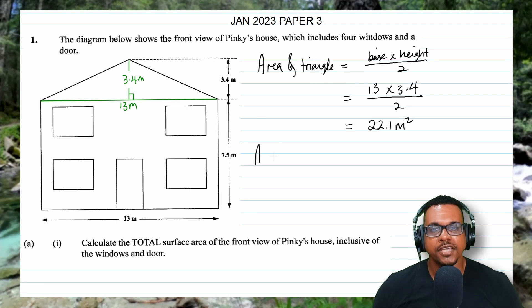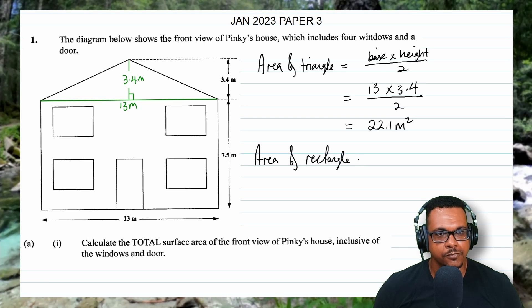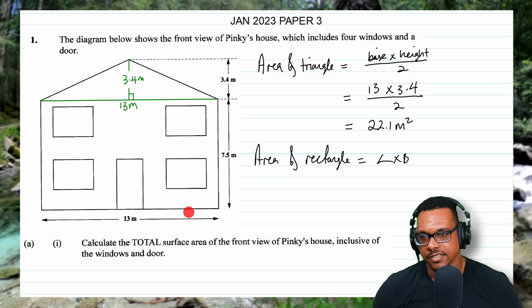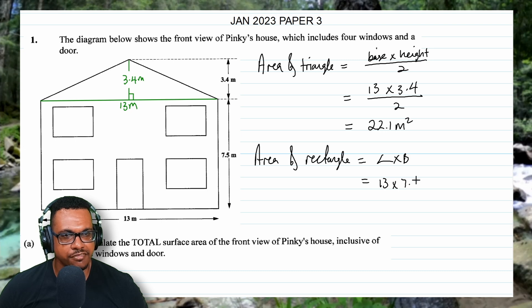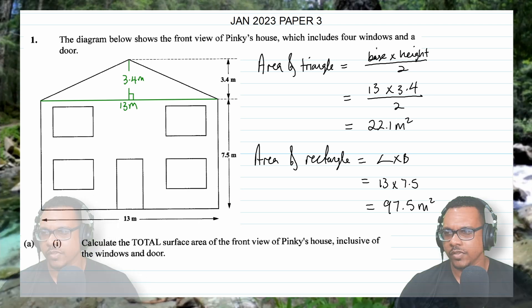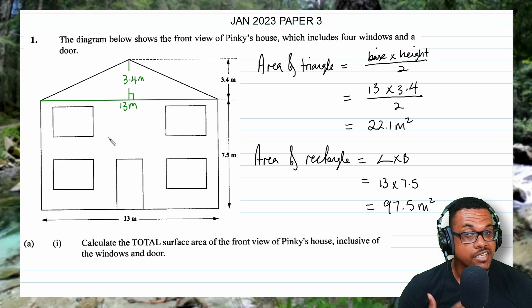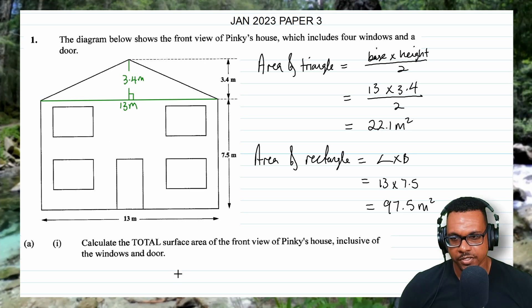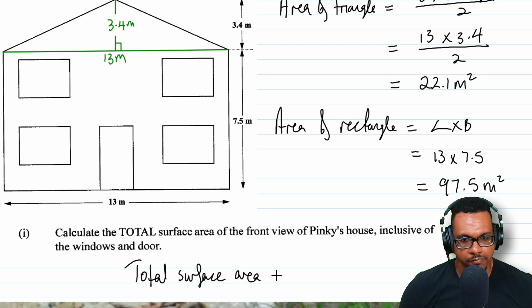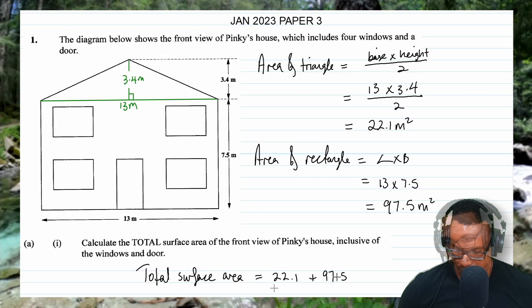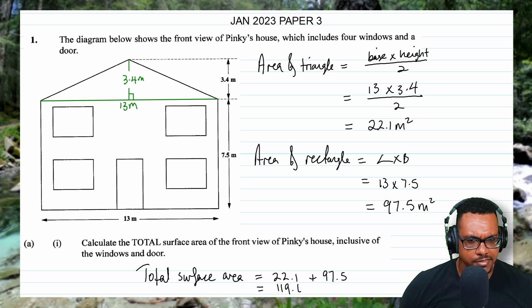Now let's find the area of the rectangle. The area of a rectangle is length by breadth — the length is 30 meters and the breadth is 7.5 meters. So 30 times 7.5 equals 97.5 meters squared. Adding the triangle and rectangle areas together: 22.1 plus 97.5 equals 119.6 meters squared. This is our answer for part A part 1.